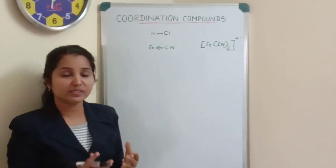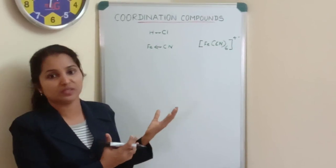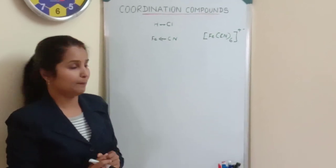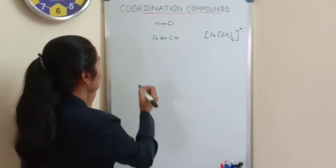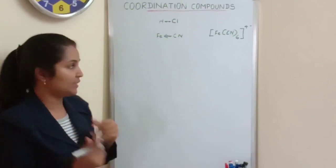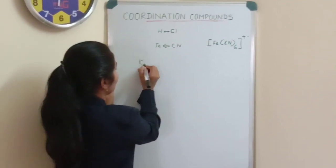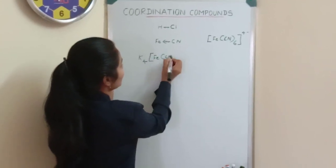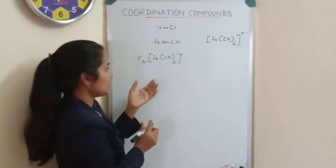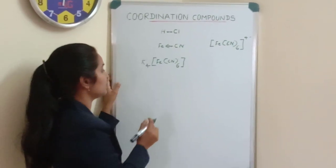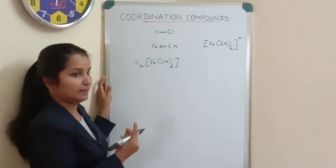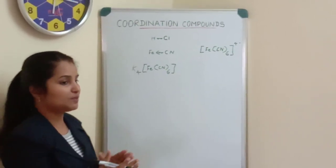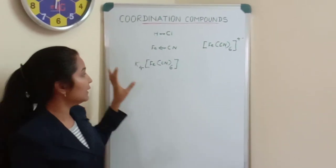Compounds containing such coordinate bonds are known as coordination compounds or coordination complexes. Examples include K₄[Fe(CN)₆] — potassium ferrocyanide — and another example is nickel tetracarbonyl. There are different types of examples of coordination compounds.